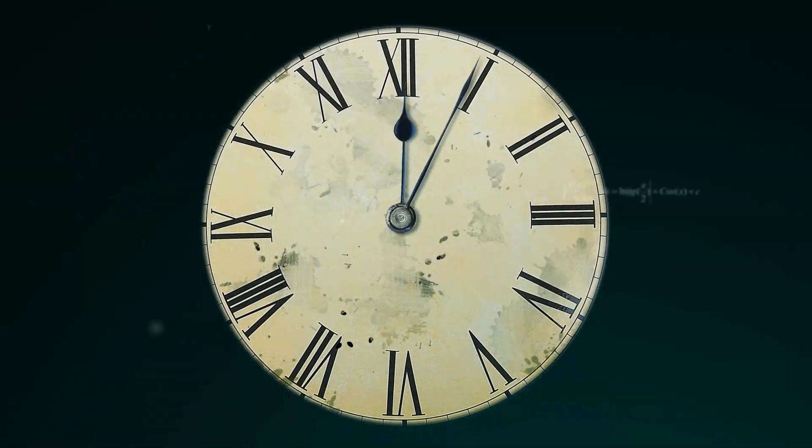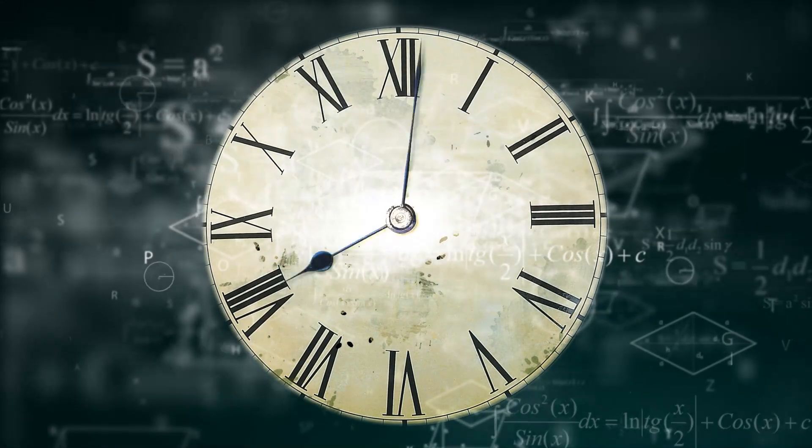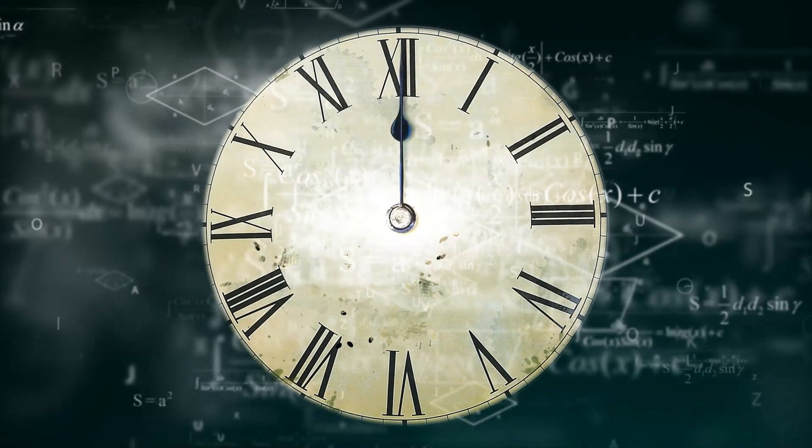So if something happens every second, its frequency is 1 hertz. In simple terms, hertz tells us how often something happens in one second.